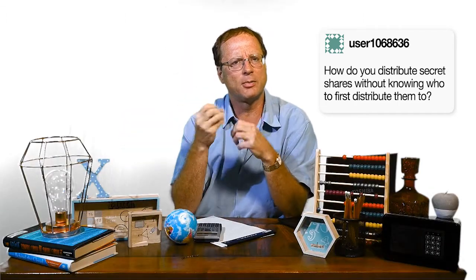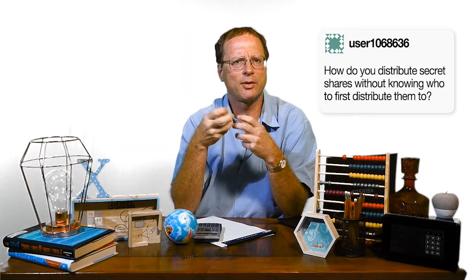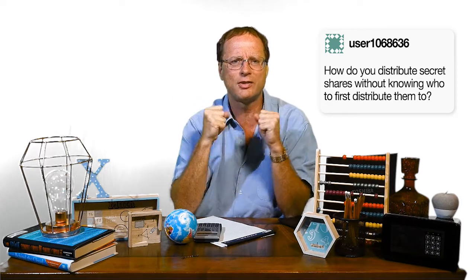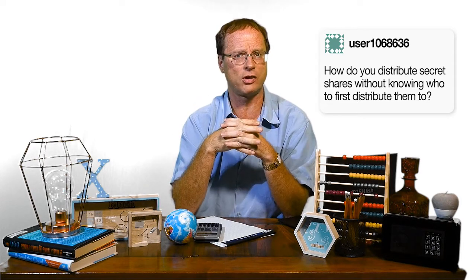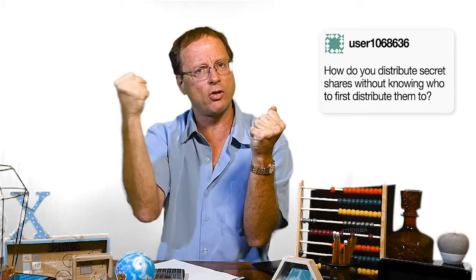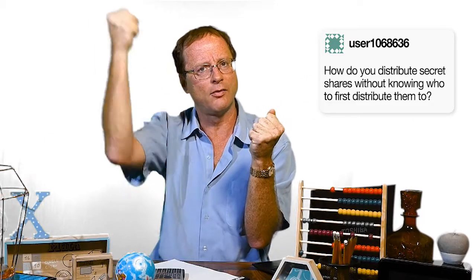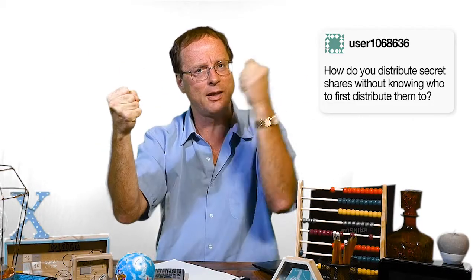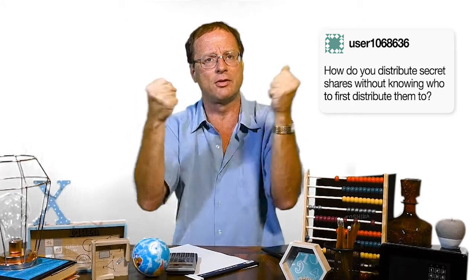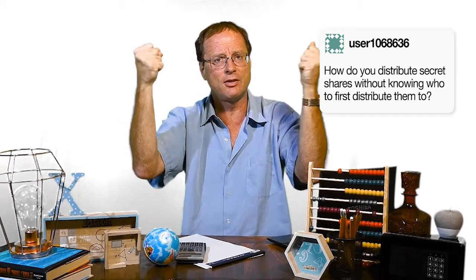But it doesn't really matter because each computer has some sort of public key, some sort of identity to it. So you could take the value you want to secret share, you split it into two, and then you encrypt one for one public key and one for the other. You don't really have to know what their endpoint entities are, because the secret keys for those public keys will be on the places where they need to go.